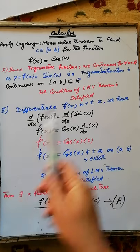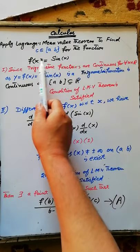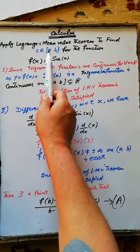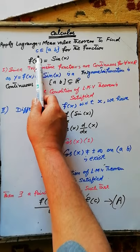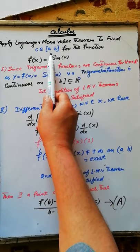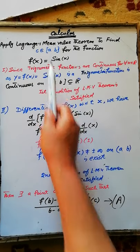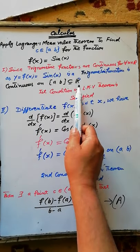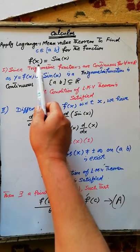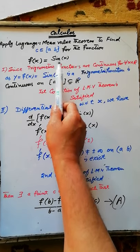Bismillah ar-Rahman ar-Rahim. Apply the Lagrange Mean Value Theorem to calculate a point c contained in the closed interval from a to b, which is a subset of the set of real numbers, for the function f(x) = sin(x).